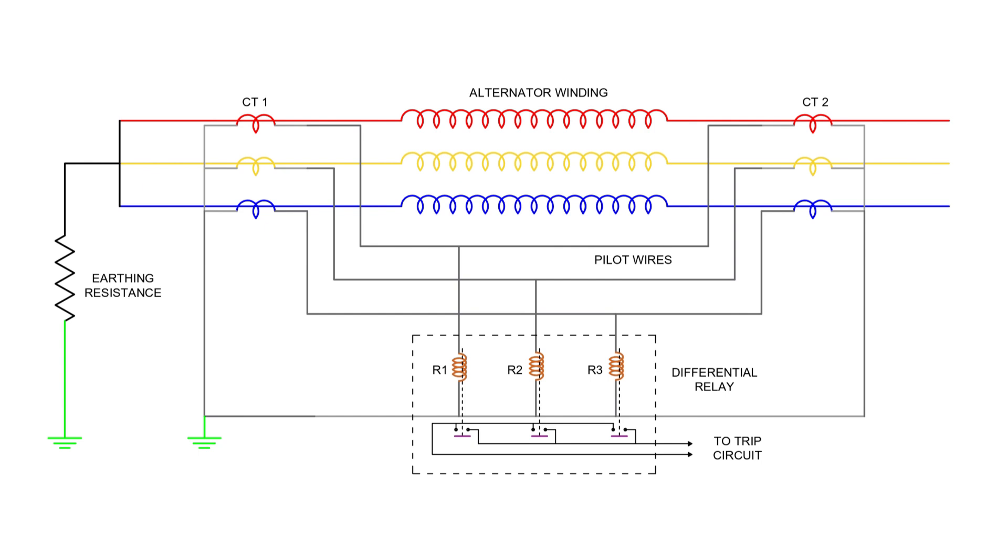Now, have a look at the schematic shown on the screen. It represents a three-phase alternator protected by differential protection. On each phase, R, Y, and B, we place two identical current transformers, one on the neutral side and one on the terminal side. These CTs monitor the current entering and leaving the stator windings.